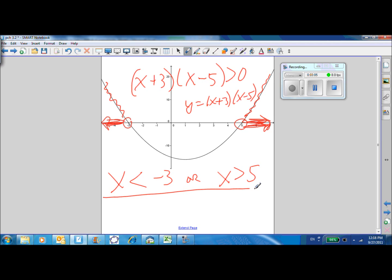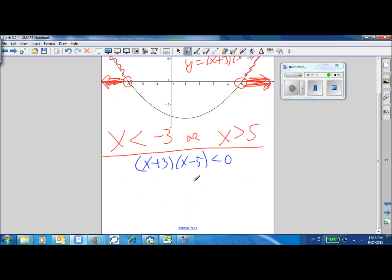So conversely, what if I ask the question of X plus 3 times X minus 5 is less than 0? Well, now that's going to be those points in here where the Y coordinates go underneath the X-axis and are negative. So therefore, we get negative 3 is less than X is less than 5 for that answer.